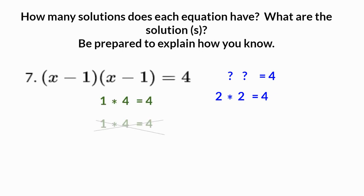We need to consider that x minus 1 and x minus 1 are the same number, so 1 and 4 aren't going to work. They have to be the same number since x minus 1 and x minus 1 are the same factor. So 2 times 2 works, but so does negative 2 times negative 2.